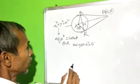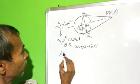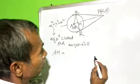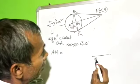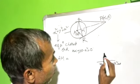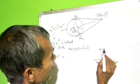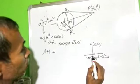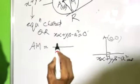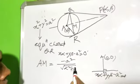Now, perpendicular distance A to M. The perpendicular distance AM, using the line x·alpha plus y·beta minus a square equal to 0 and point A at (0, 0), equals minus a square by root over alpha square plus beta square.